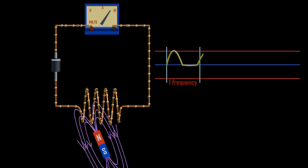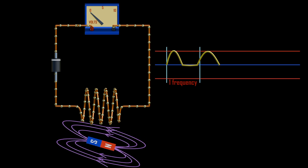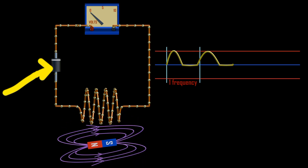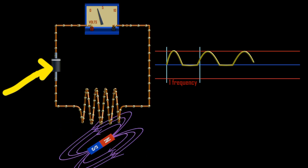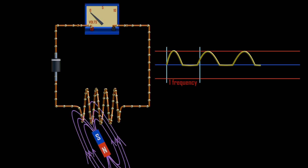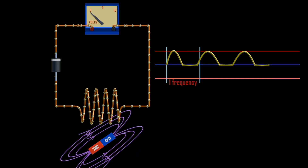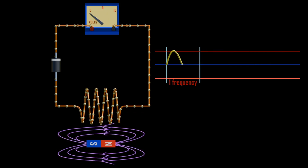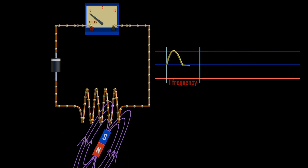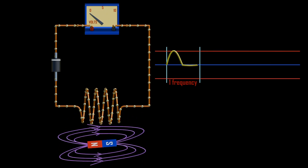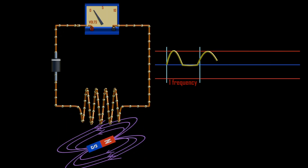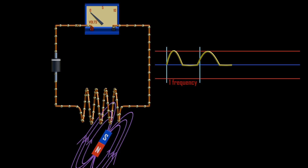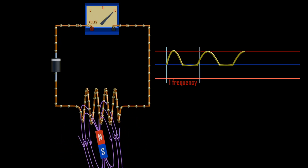In the circuit, if we place a diode, it will block half of the waveform. Remember, diodes only allow current to flow in one direction — for example, forward current passes and reverse current is blocked.